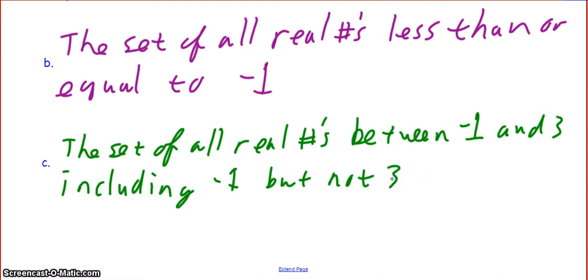And so for the last one, you could say something along the lines of: the set of all real numbers between negative 1 and 3, including negative 1, but not including 3. There are a few other ways to phrase that, but again, we're not using the variable x. We're just talking about the set of all real numbers — in this case, between negative 1 and 3, including negative 1 but not 3.